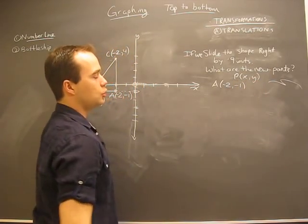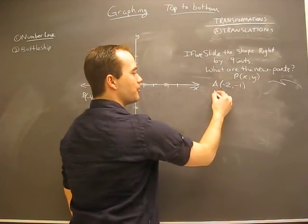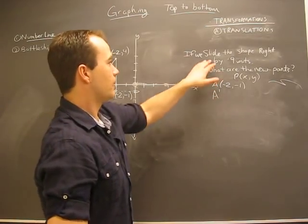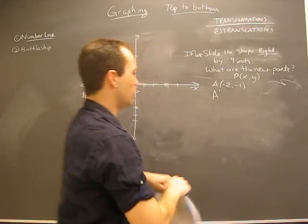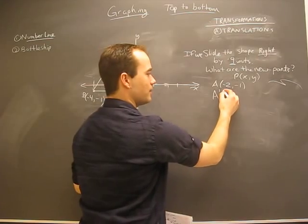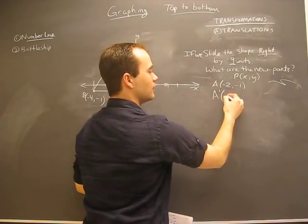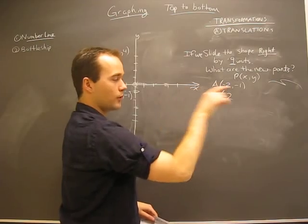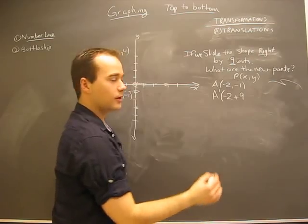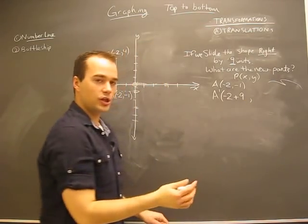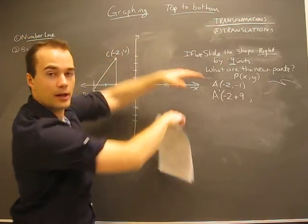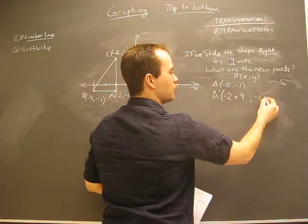If A is negative two, negative one, that means A prime, we're moving. When we understand what we're reading here, we're sliding the shape to the right. That means we're going positive by nine units. If this is x, and we're going to slide it to the right, that's adding nine units. That will be our new x point. Has y changed? No, we're just sliding it right along, so the height of this triangle is staying right here the whole time, so that'll stay there minus one.